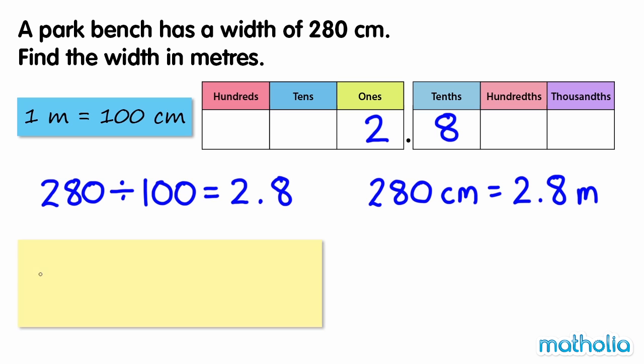Another way we can divide by 100 is to shift the decimal point. Shifting the decimal point two places to the left also gives 2.8.